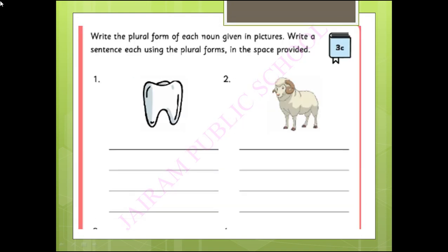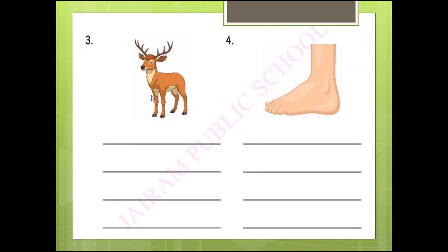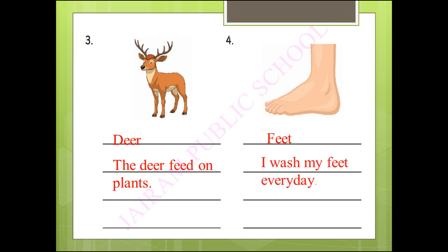Write the plural form of each noun shown in pictures and write a sentence using the plural form. Teeth — 'We brush our teeth regularly.' Sheep — 'The sheep are grazing in the field.' Deer — 'The deer feed on plants.' Feet — 'I wash my feet every day.'